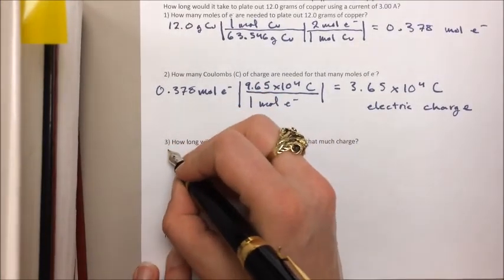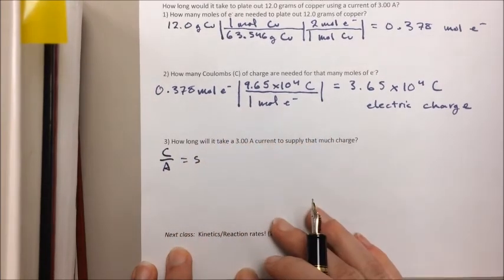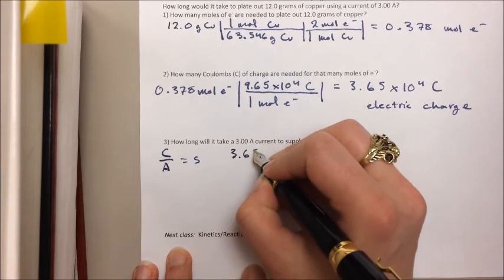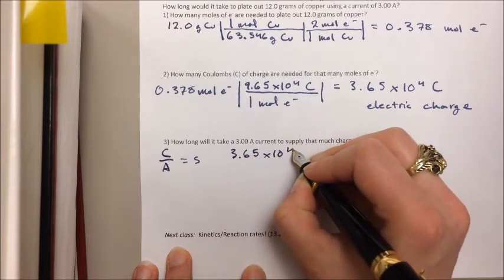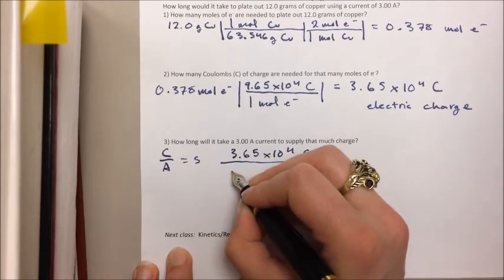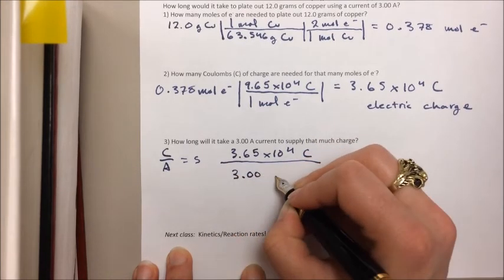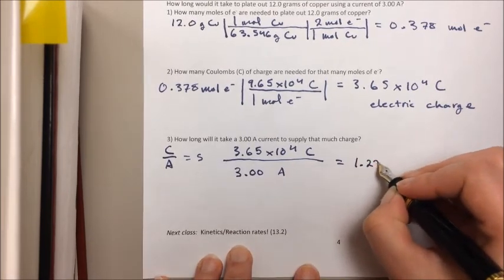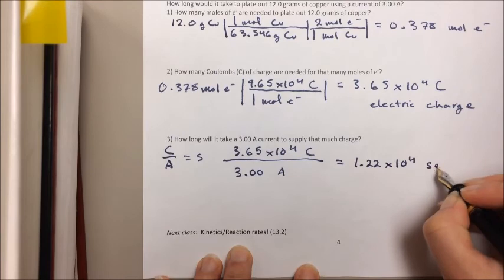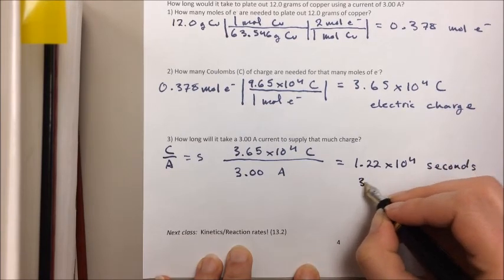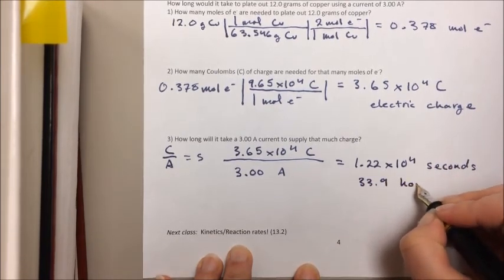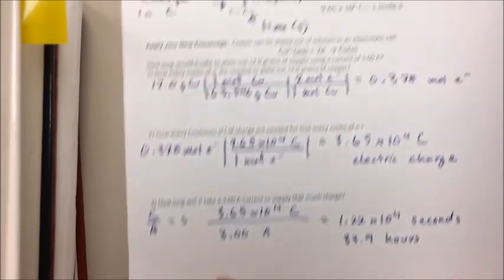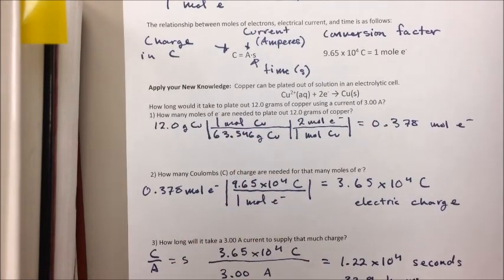So we know that our C over A equals S if we algebraically rearrange that. The amount of charge we need is 3.65 times 10 to the 4th coulombs. We're going to divide that by 3.00 amps. We crunch those numbers, we get 1.22 times 10 to the 4th seconds, or 33.9 hours. That's a very long time. Well, that's because a 3-amp flow isn't very big, and 12 grams of copper is a lot of copper to plate out.